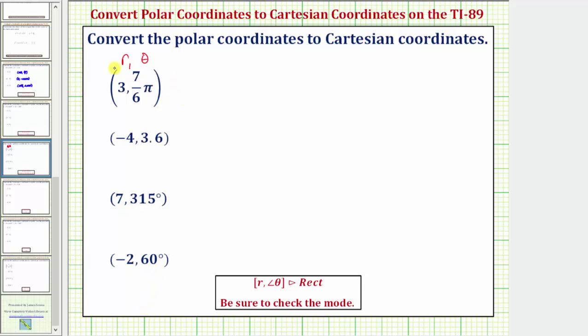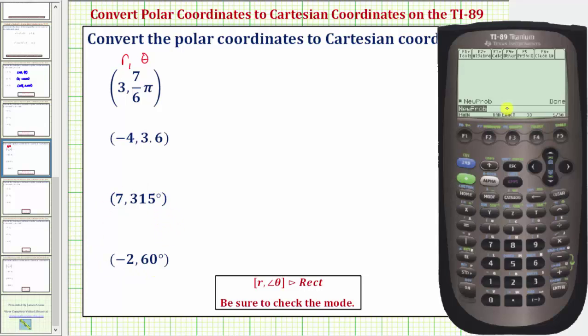So we'll have to be in radian mode for these two ordered pairs and degree mode for these two ordered pairs. Looking at the bottom of the screen, notice how the calculator is in radian mode because it says RAD, it's also in exact mode. These are the modes we want to convert these first ordered pairs to rectangular coordinates.